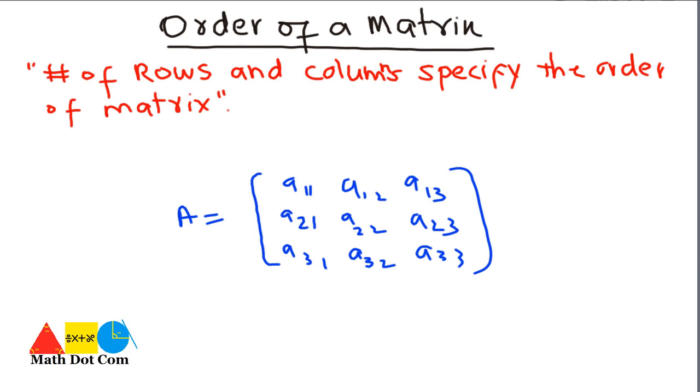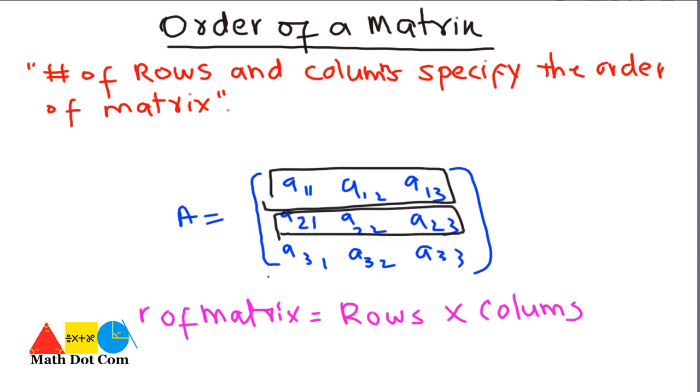In order to find the order of a matrix, conventionally we have to write rows multiplied by columns. Whenever you write the order of matrix, rows will always come first conventionally. If you want to find the order of this matrix that is given, what we have to do first, we have to find the number of rows.